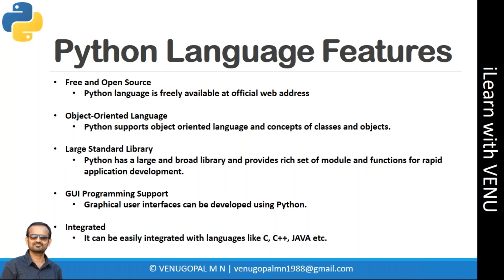Python is also integrated — it can be easily integrated with other languages like C, C++, and Java. Assume you are developing a complex application that involves multiple languages: part is developed in C, part in Java, and part in Python. Based on your business requirement or application performance needs, you can implement a particular module using Python and then integrate it with other language modules.